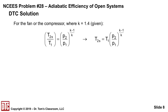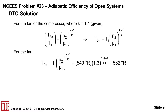For the fan or the compressor, with constant specific heats where K equals 1.4, we can solve for T2S. We're given the ratio of pressures for the fan and for the compressor, so we can find T2S. For the fan, T1 is 540 degrees Rankine — remember to use absolute temperature. The pressure ratio for the fan is 1.3, raised to the (K minus 1) over K power, giving T2S equals 582 degrees Rankine.